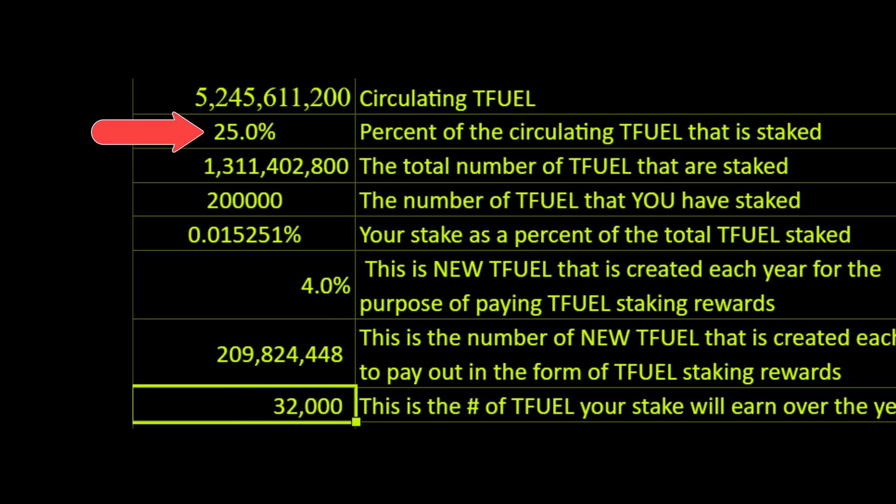We're going to circle back and talk about this percentage figure here, because a number of the figures below are based on it. We are assuming that twenty-five percent is the accurate percentage of the total that will be staked — we don't know that to be fact. This number can change in real time; it could be higher or lower, so you need to keep that in mind. We are just taking a guess at what percentage would be staked at any given time.